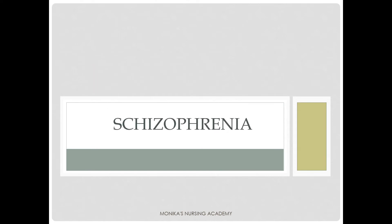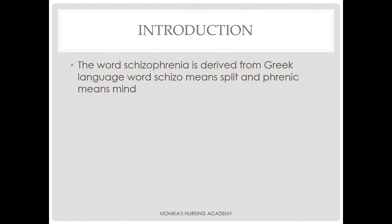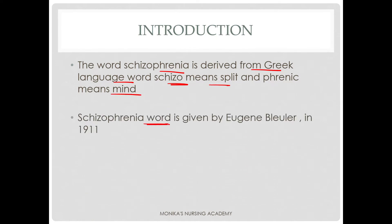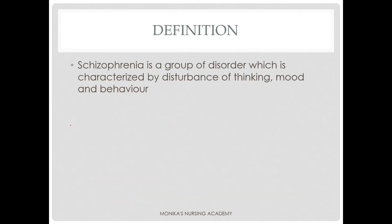Hello everyone, we are the team of Monica's Nursing Academy. Today we will discuss schizophrenia. The word schizophrenia is derived from the Greek language, where 'schizo' means split and 'phrenic' means mind. The word schizophrenia was given by Eugene Bleuler in 1911. A common exam question is: who gave the word schizophrenia? — Eugene Bleuler in 1911.